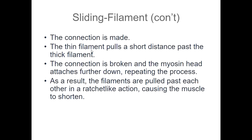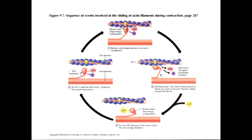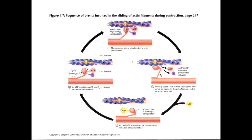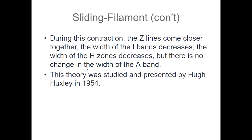The thin filament is pulled back by the thick filament — by the myosin head. The myosin head breaks loose, reaches up and finds another active site further down the actin strand, connects, and pulls it again. It's a ratchet-like action — a lot like tug-of-war. This keeps going until your muscle gets shorter and shorter. When you're looking at a muscle, when the Z-lines get closer together, the sarcomere is decreasing, which tells us that a contraction is taking place.